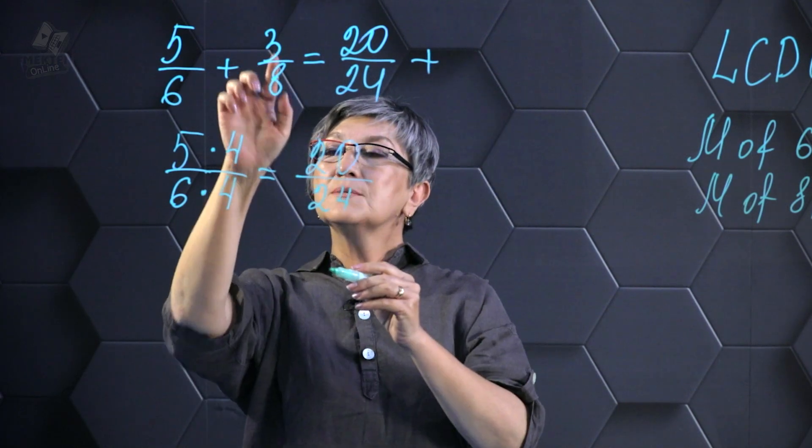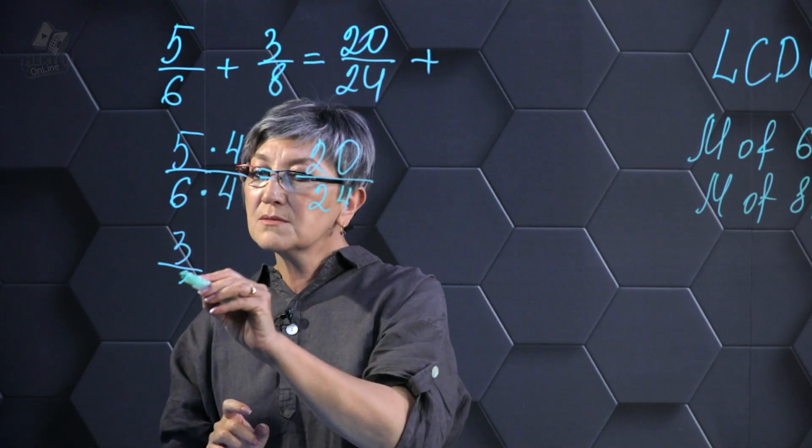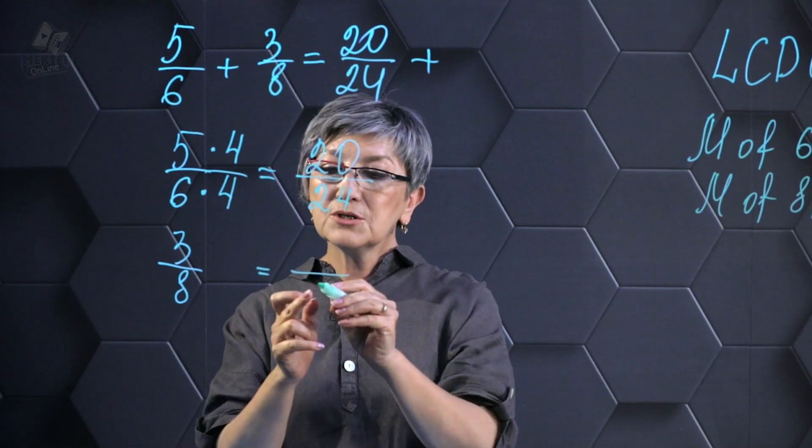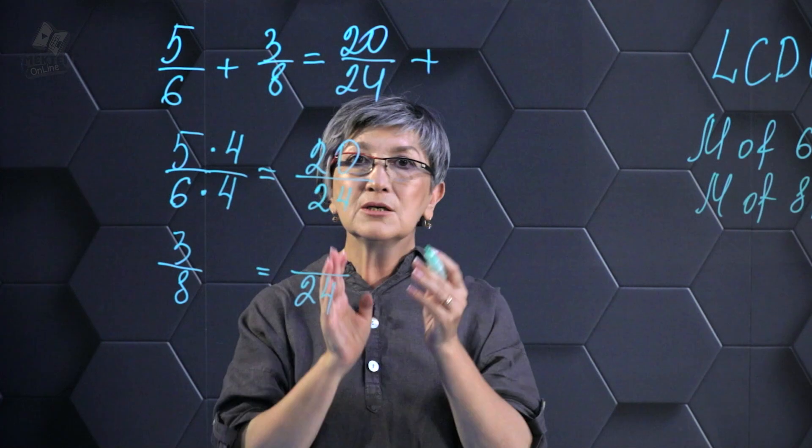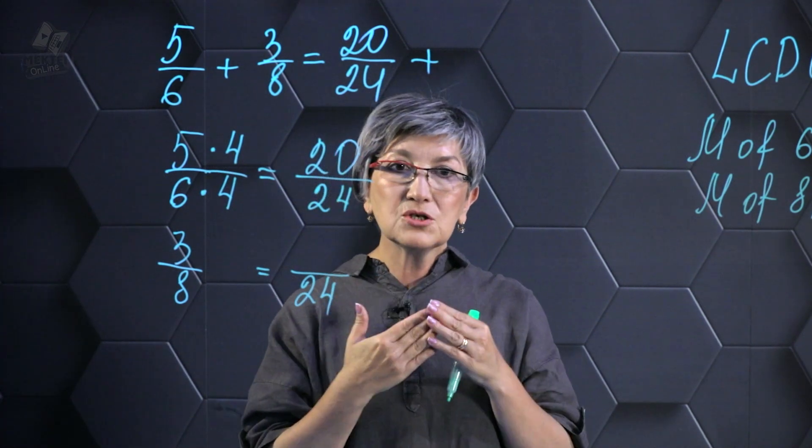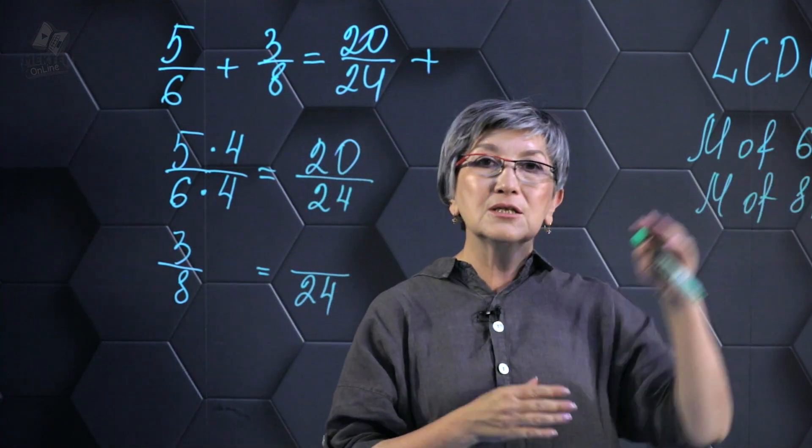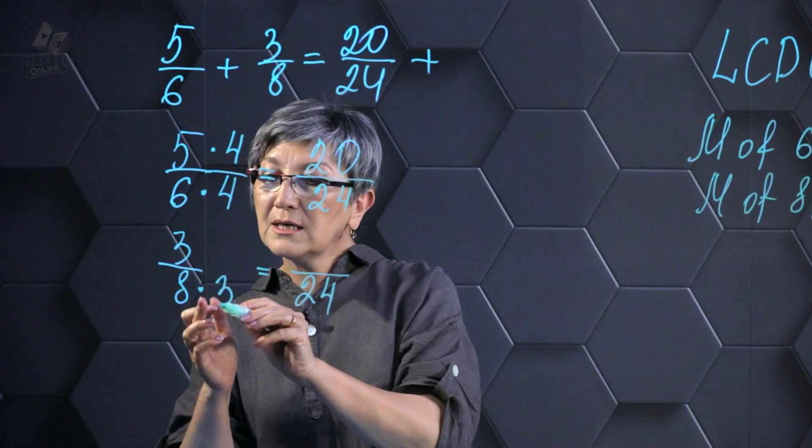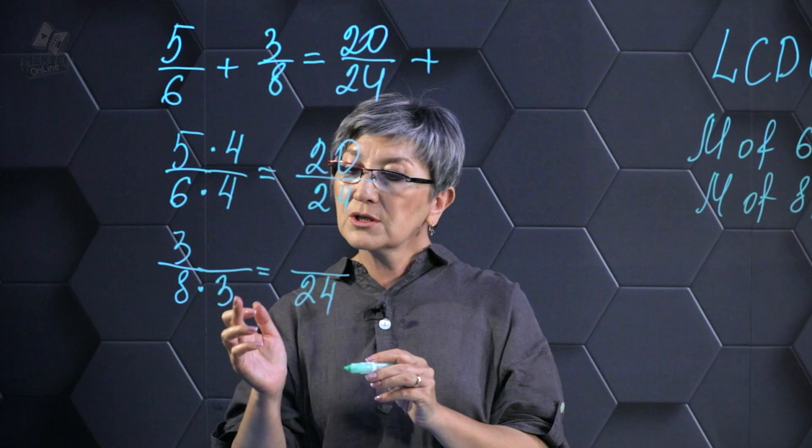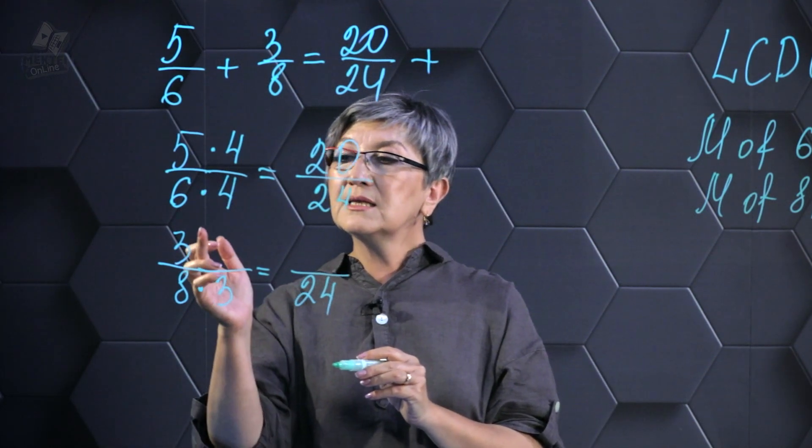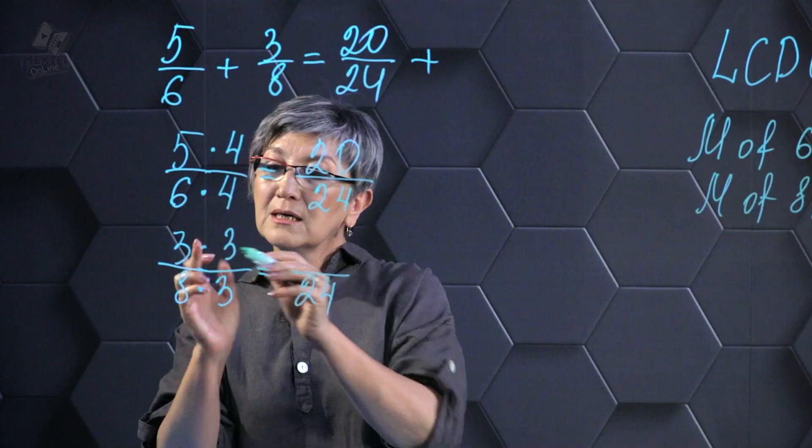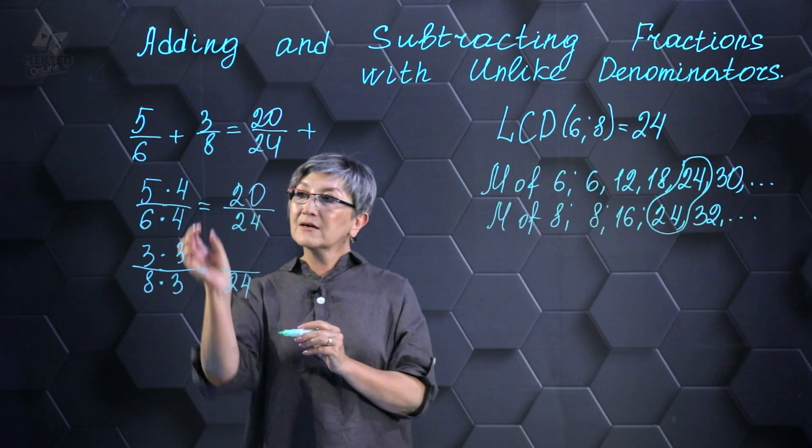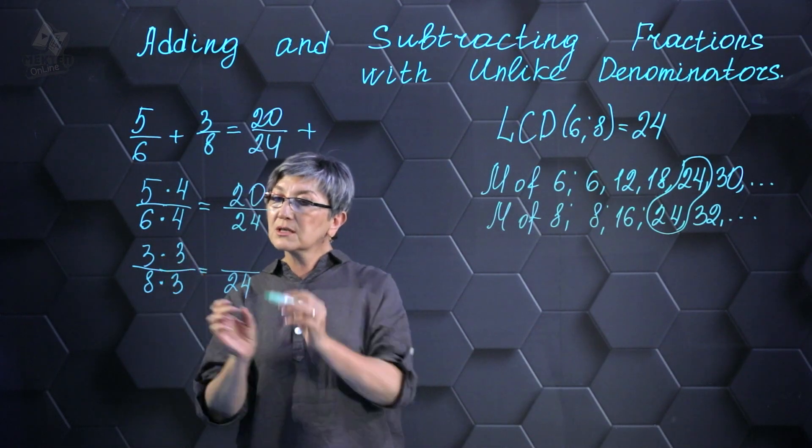Following that, in addition, 3 out of 8. I require the denominator to be the value of 24. Once again, why 24? Because we discovered that number. I multiply 8 by 3. If you multiply 8 by 3, you'll get 24. Then I perform multiplication by multiplying 3 with 3. These numbers should be the same and unchanged. Same numbers, it's going to be 9/24.